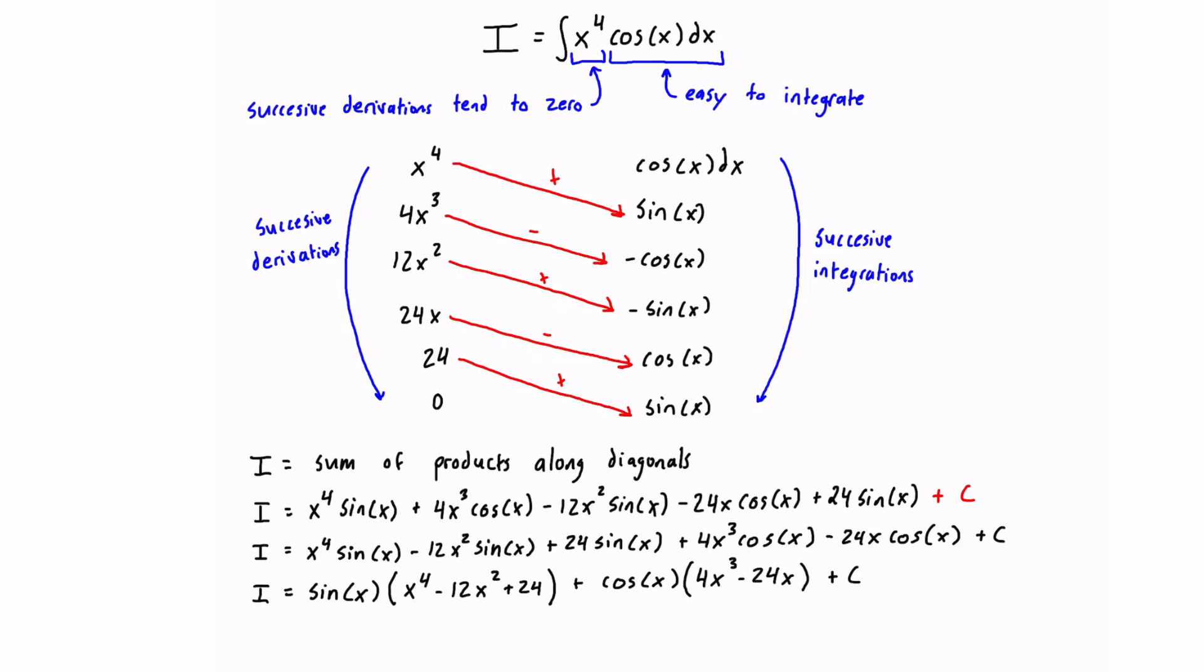And then we can simplify this step one further by pulling a 4x out of this thing that follows the cos x. So we could have this times 4x times just x squared minus 6 plus c. And that should be in a reduced enough form to satisfy your professor or whoever is trying to ask you this question.